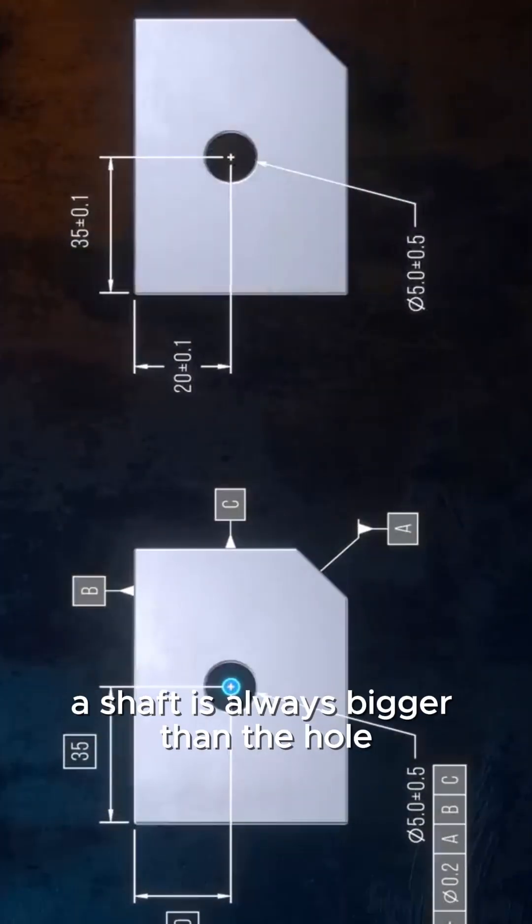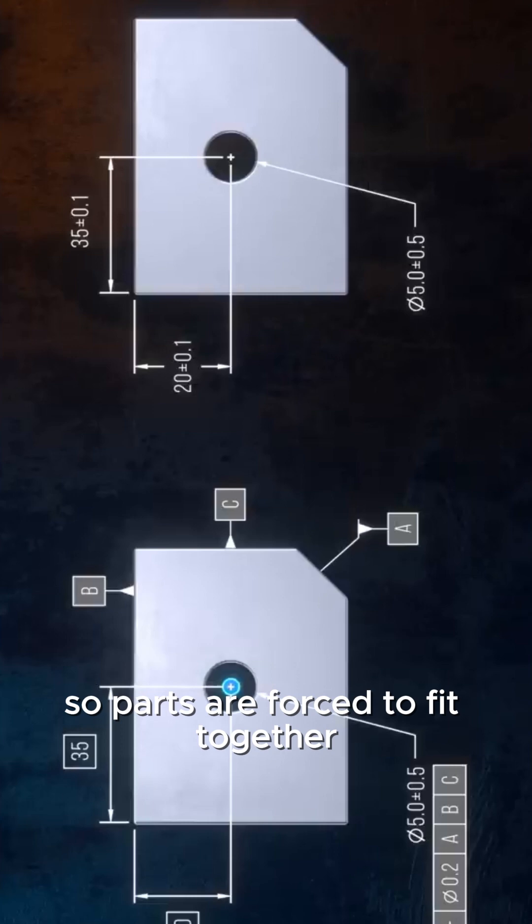In an interference fit, the shaft is always bigger than the hole, so parts are forced to fit together, locked in place, often permanently.